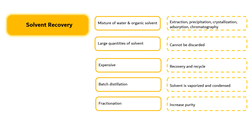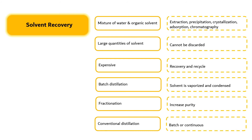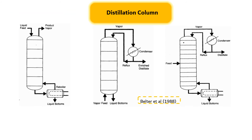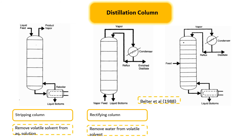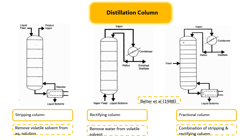When fractionation is required, conventional distillation is the common choice. Operations may be batched or continuous. There are three types of multi-stage distillation columns as shown in the figure. First, the stripping column — you remove a small amount of volatile solvents from aqueous solution. Second, the rectifying column — you remove a small amount of water from a volatile solvent. Third, the fractional column — you combine stripping and rectifying columns.